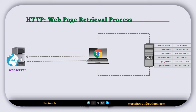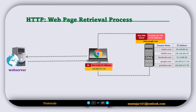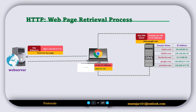Now let's understand the HTTP web page retrieval process using this illustration. The user enters the URL into the browser's address bar. The browser reaches out to a DNS server to match the domain name to an IP address. The DNS server looks up the domain, and if found, sends the matching IP address back to the browser. Using this IP address, the browser sends a request to the web server. Once the server receives the request, it sends the page data back to the browser, which then processes and displays the web page.